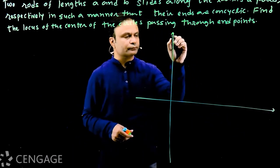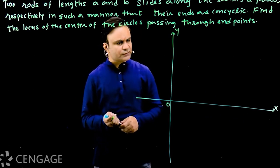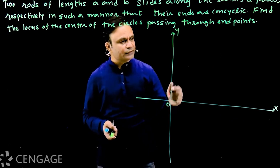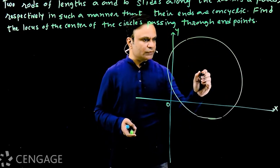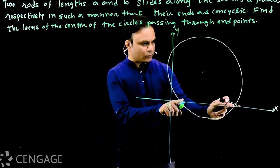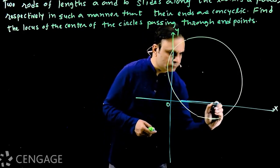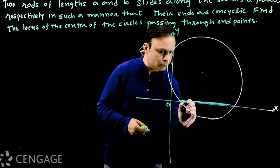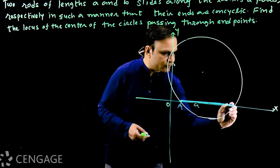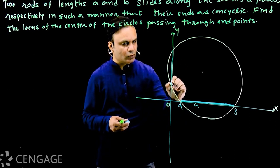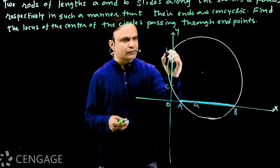We have the coordinate axes. First, let's draw the circle which intersects the x-axis and y-axis. This is the center of the circle. Now this is the rod of length a — suppose this is point A and this is point B.